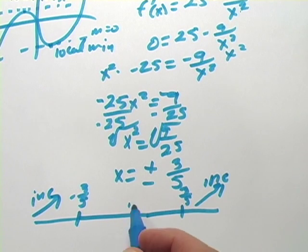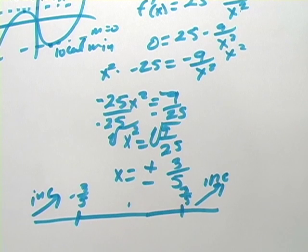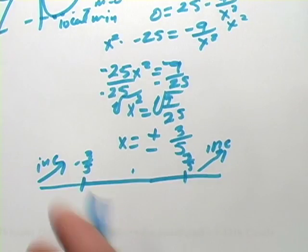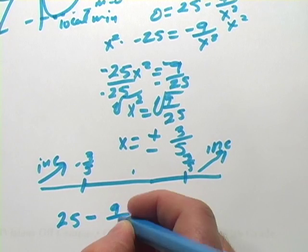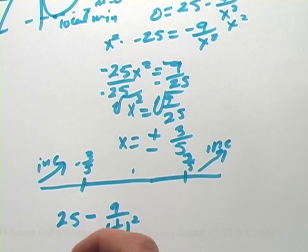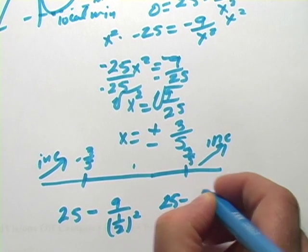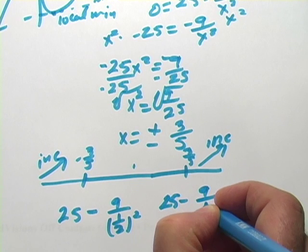Let's take 1 half and put it in there. So if I've got 25 minus 9 over 1 half squared, that's 25 minus 9 over 1 fourth. And that's 9 times 4, that's 36.